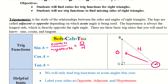Next we have cosine, which is the CAH, and that is adjacent over hypotenuse. We can write that as A over H. With angle A, adjacent is going to be directly next to whichever angle we're working with, and of course the hypotenuse will stay the hypotenuse.